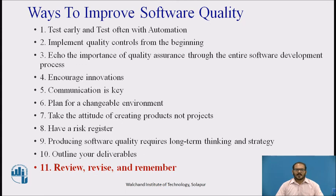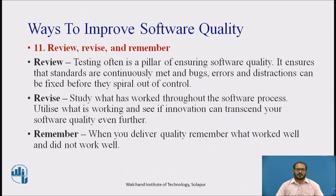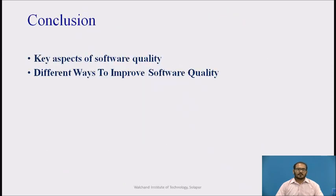Review, revise, and remember. Producing software quality is not a coincidence — this is why you must always follow these three things: review, revise, and remember. We have discussed the different aspects of software quality and the different ways to improve it.